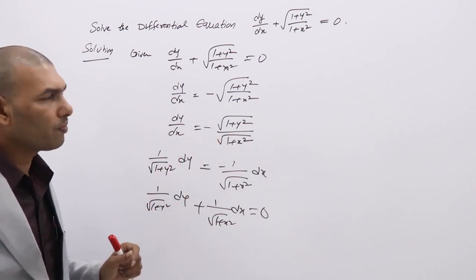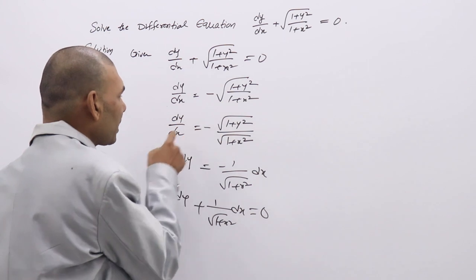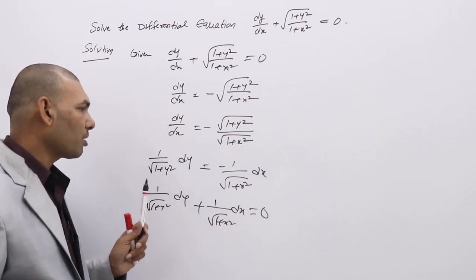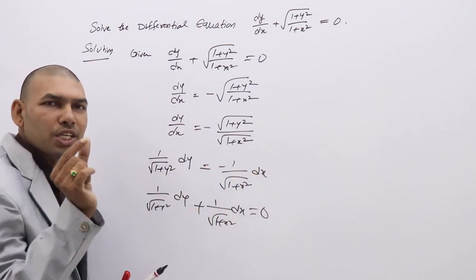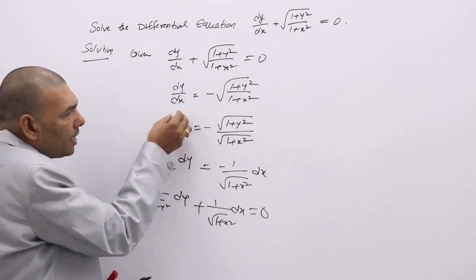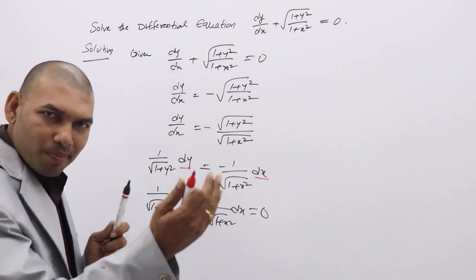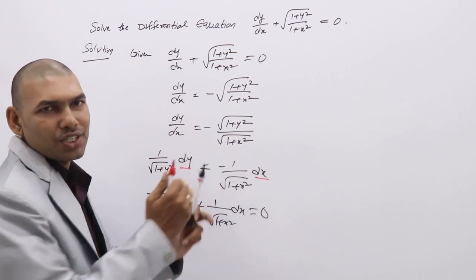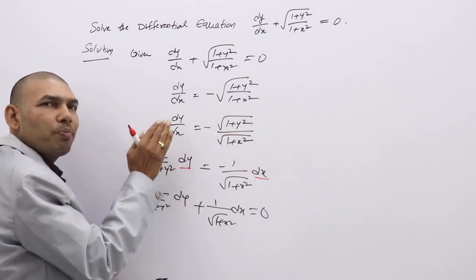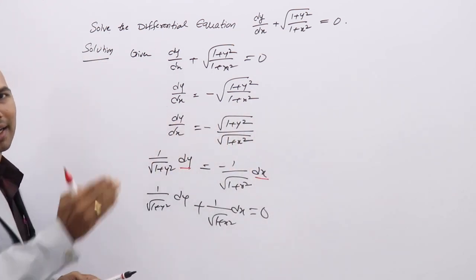Here you can get a very clear idea — this is variable separable form. One simple but important point to keep in mind: dy and dx should always be in the numerator. You cannot take √(1+x²) to one side and dy to the other incorrectly. Keep dy and dx in the numerator; the remaining terms only you move to LHS or RHS. So take dx to the RHS — x terms will be on the right, y terms on the left.